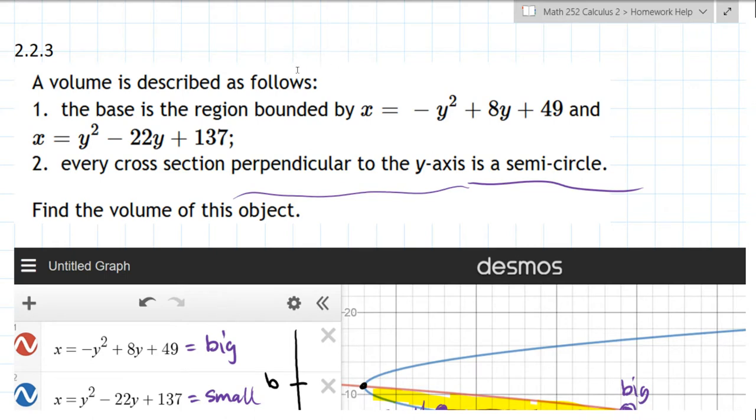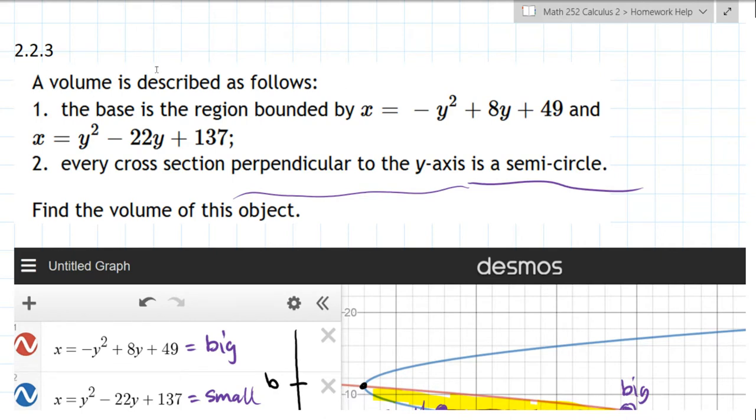However, they're parabolas in the y-coordinate, not the x-coordinate. So they're gonna open left and right. The negative y-squared is gonna open to the left, which is where it's a negative x-axis. The positive y-squared is gonna open to the right, which is a positive x-axis.